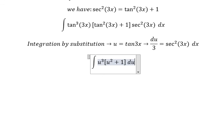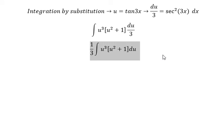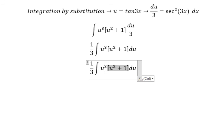We put 1/3 in here and now u³ multiply with u² plus 1, so you got u⁵ plus u³.